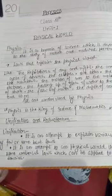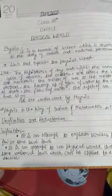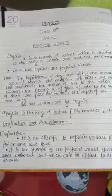In this chapter we read about the basic things about physics. The very first thing is what is physics? It is a branch of science which is devoted to the study of nature and natural phenomena.